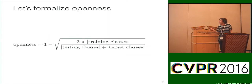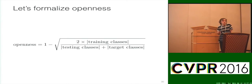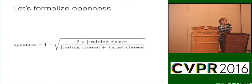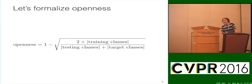Once you compute this formula you get a value between zero and one. For closed set multi-class classification the openness is zero. For face verification — if you had 12 targets, 12 training classes, and 50 testing classes factoring in some imposters — you'd get an openness measure of 0.38. Typical detection with one target but a massively large testing sample gives an openness of around 0.55. Object recognition scenarios with limited training negatives but large test class spaces can have even larger openness values.